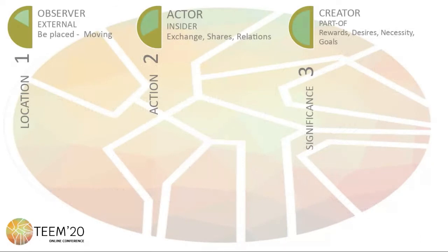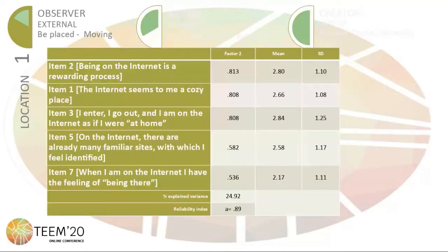The first subscale is the level of location, with six items and a good reliability index. Sample items include: 'I enter and go out and I'm on the internet as if I were at home,' or 'On the internet there are familiar sites.'